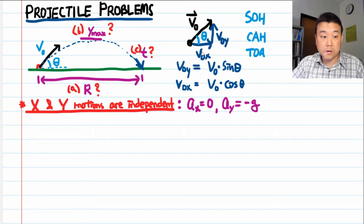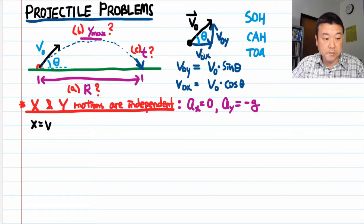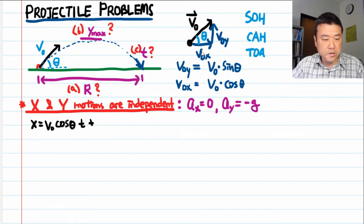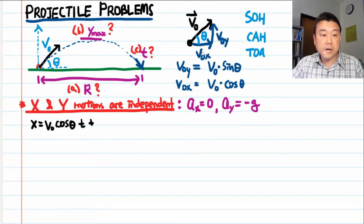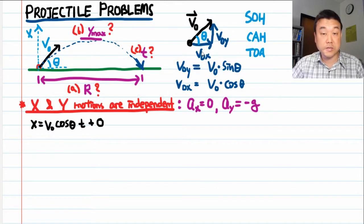Let me write down the x component first. It's easier. The x position is equal to the initial x velocity V naught cosine theta times time plus the initial x position. I need to define my axis and I'll say x is zero where the projectile starts. That makes things easier. So that's it. Because the acceleration is zero, the kinematic equation is simpler.